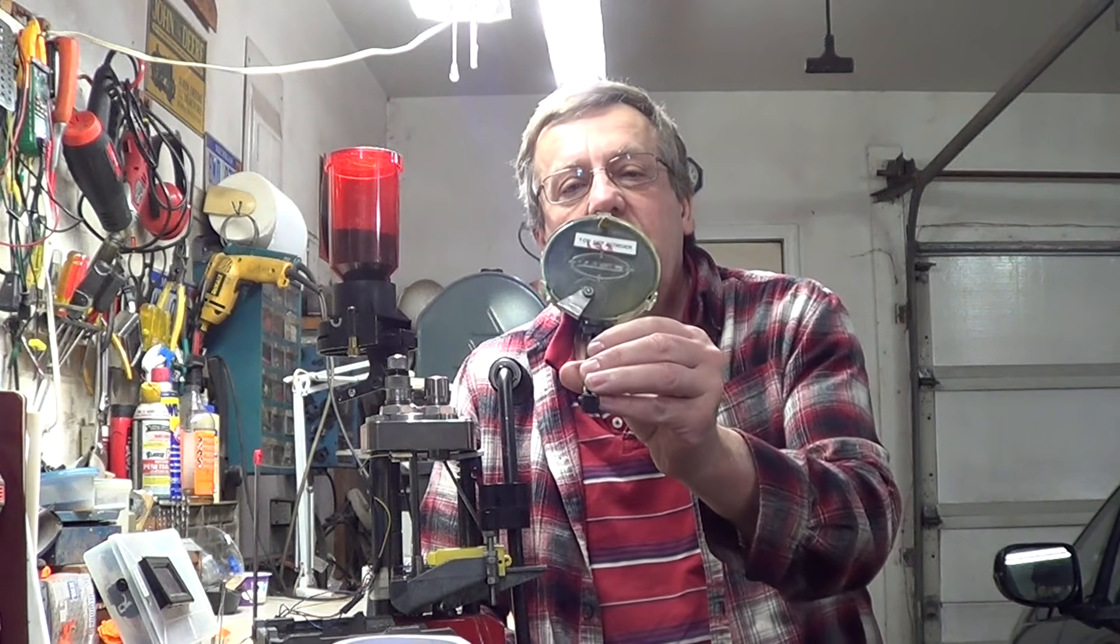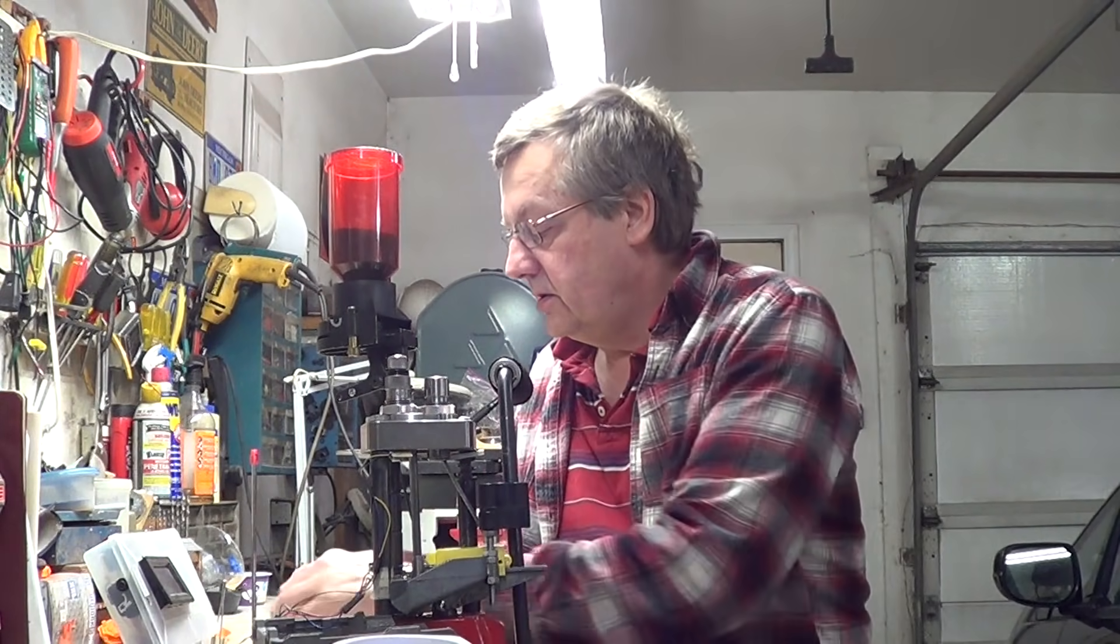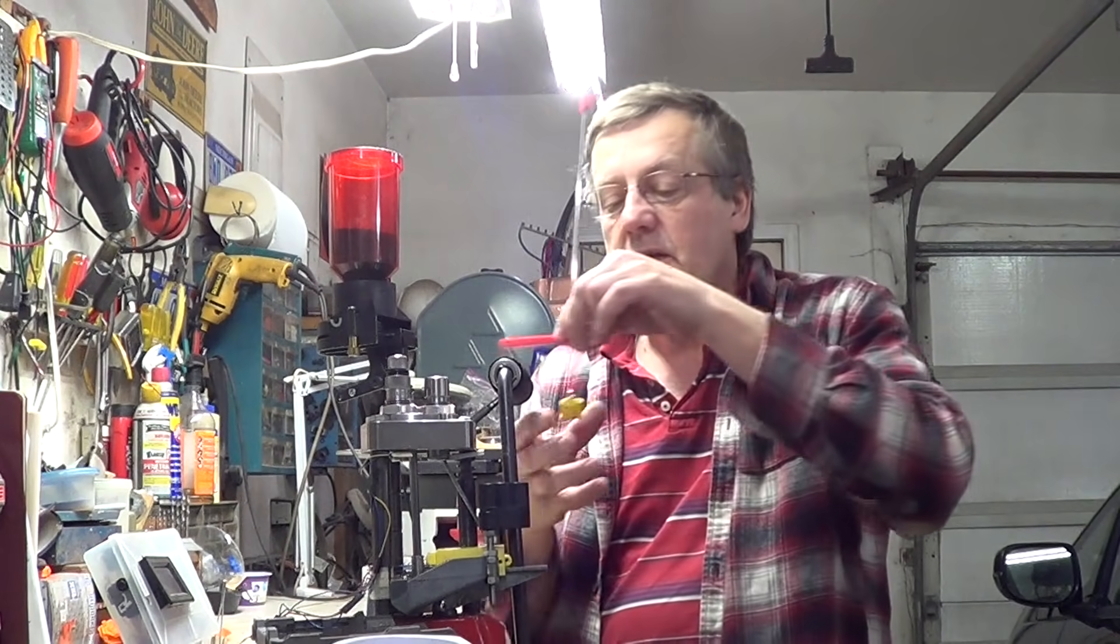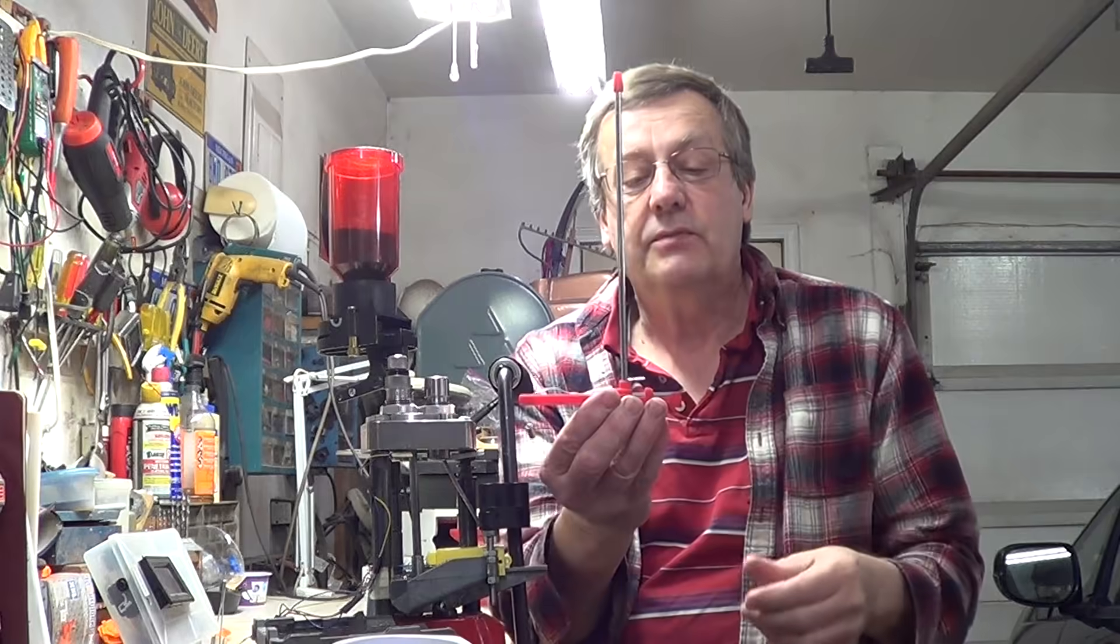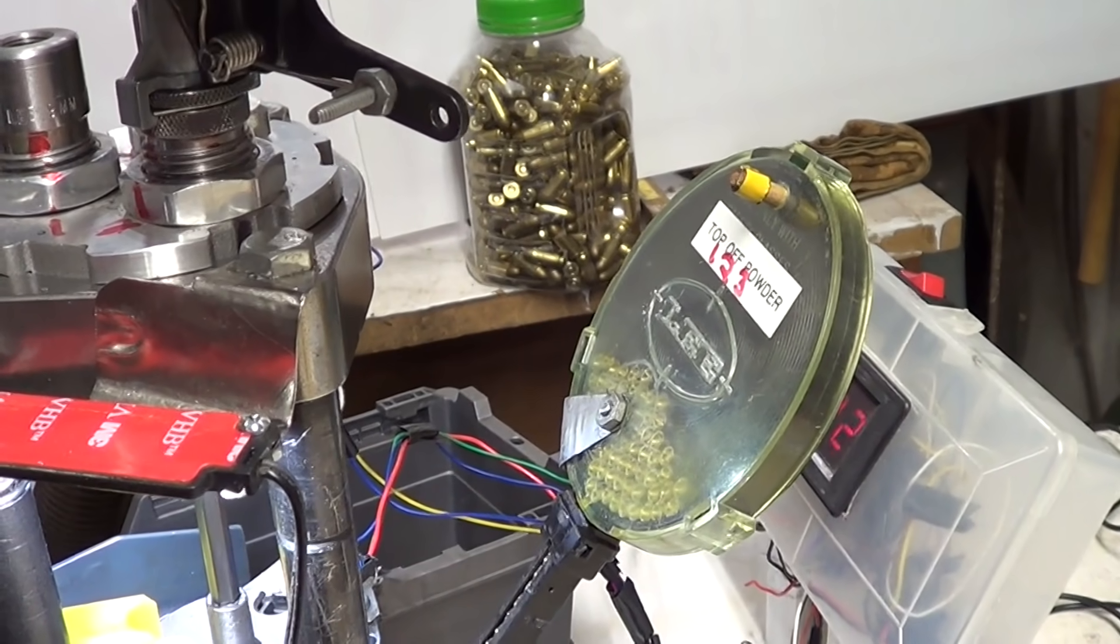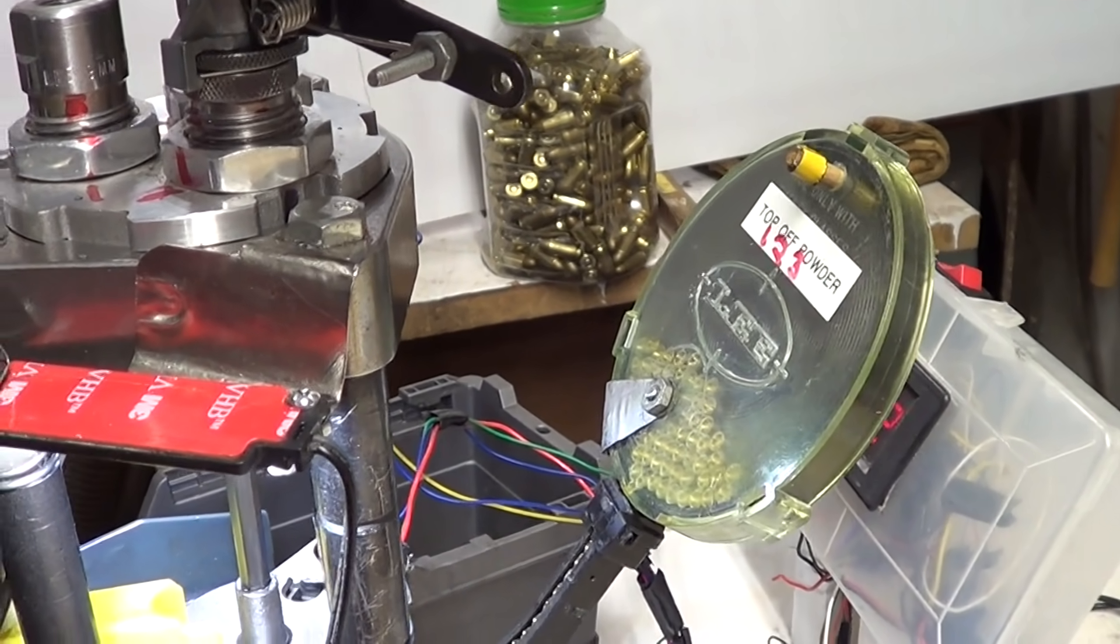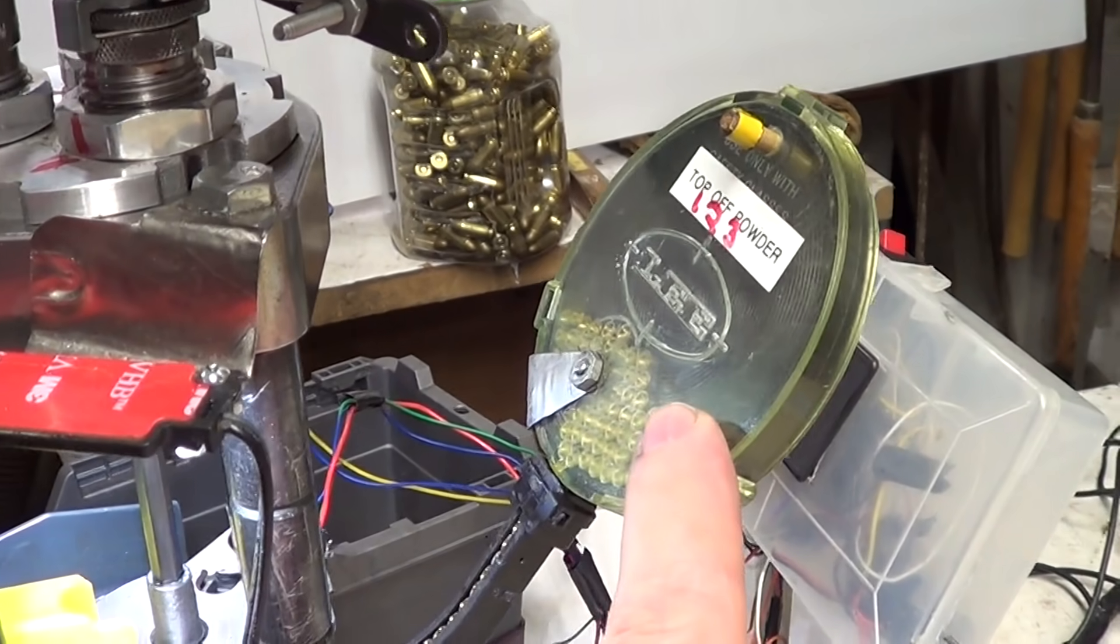Today I have my Lee Pro 1000. I'm going to show how I converted it from the standard Lee tray sliding trough primer system to a tube primer system. And a quick review. This is the Lee system. It's kind of a shake, rattle, and roll system.